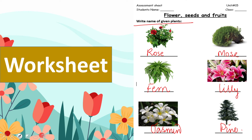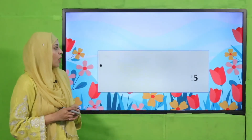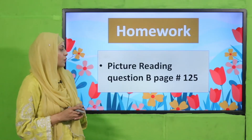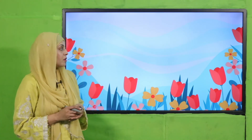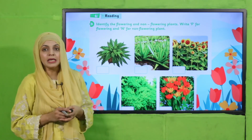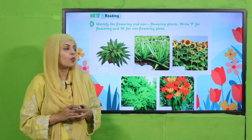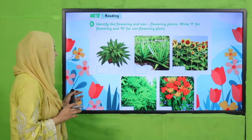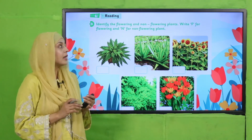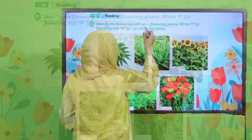Now is the time for homework. You will do the picture reading question given on page number 125 in your GK2 science portion. In question B, you can see different pictures of plants. You need to identify the flowering and non-flowering plants — write F for flowering and N for non-flowering.